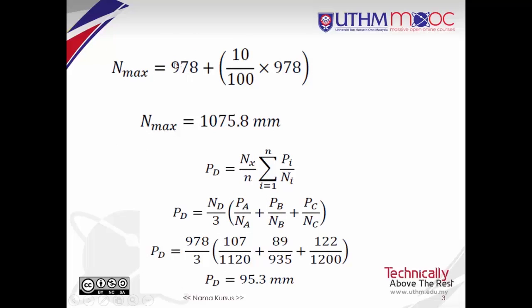If Nx is 978, 10% from Nx is equal to 97.8. After the addition of 10% of Nx in Nx, we get 1,075.8mm.